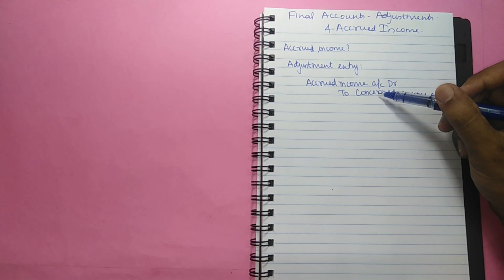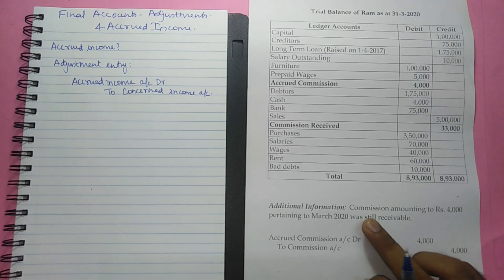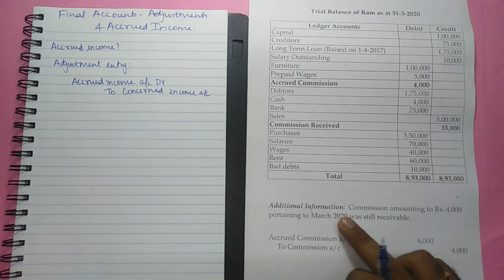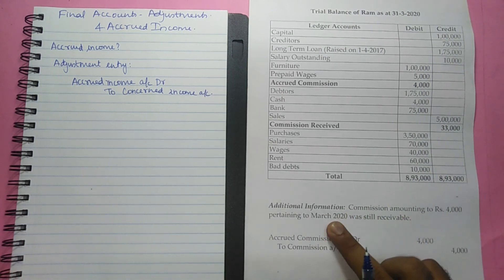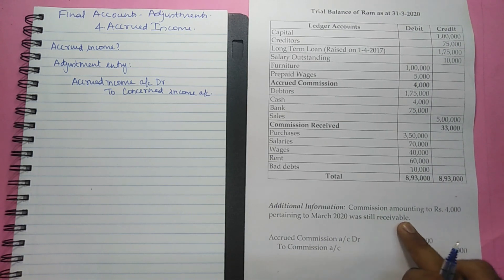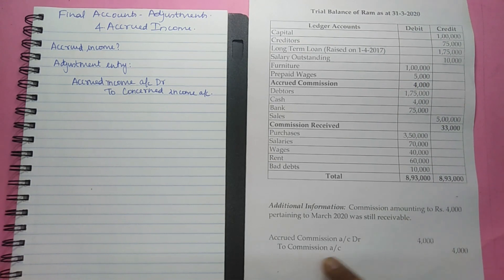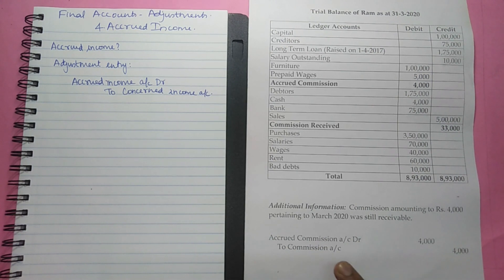Let us have an illustration to understand this adjustment. Let us have a look into this additional information. Commission amounting to Rs. 4,000 pertaining to March 2020 was still receivable. So this is an accrued income. Therefore, the adjusting entry is accrued commission account debit Rs. 4,000 to commission account Rs. 4,000.